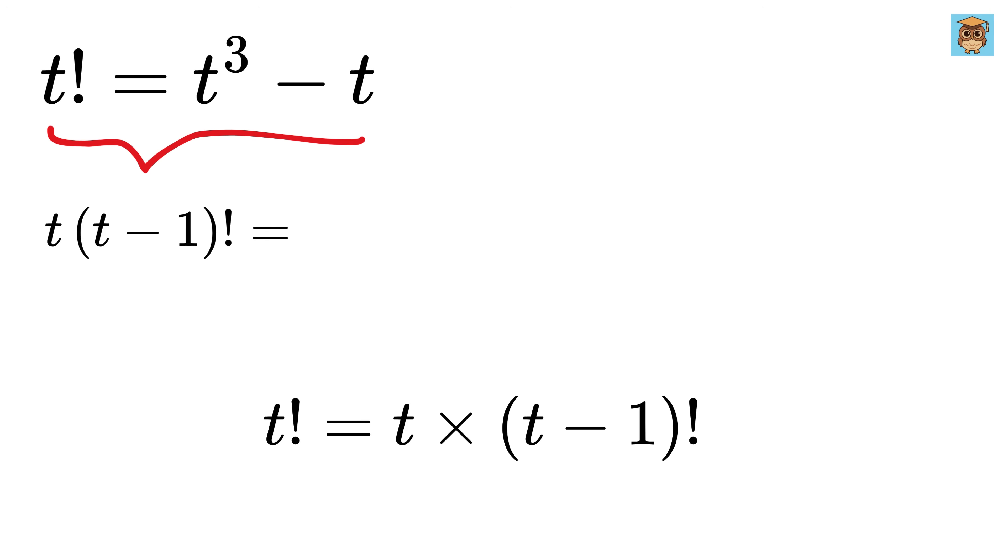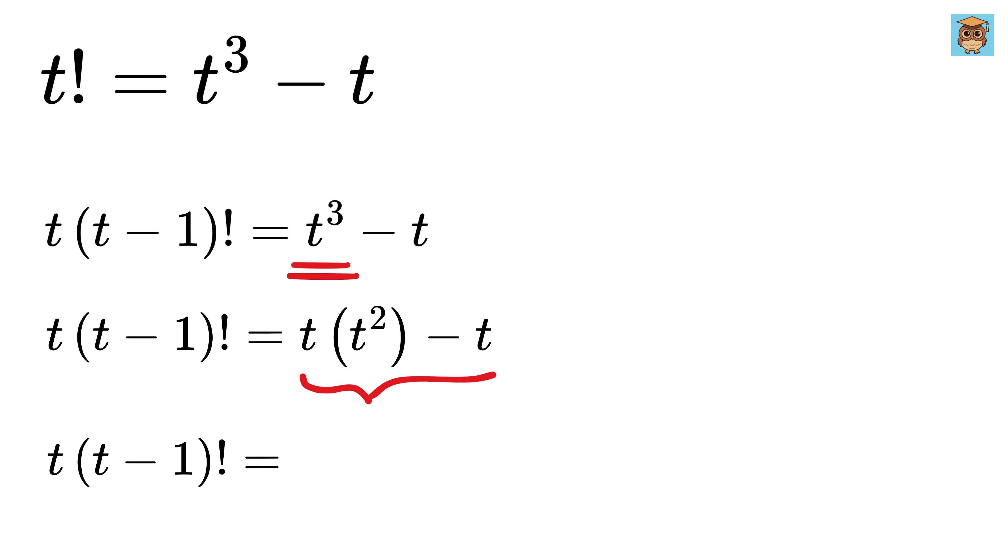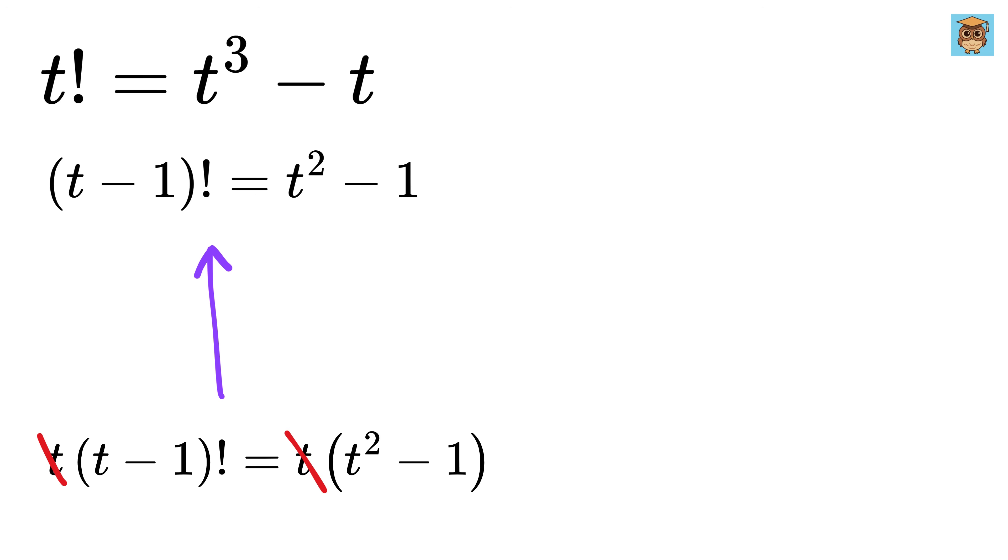So this will become t times t minus 1 factorial equals t cube minus t. Now, we can rewrite this t cube as t times t square. From this right-hand side, take t as common, and we get t times t square minus 1. Wow, both these t will get cancelled out, and we will be left with t minus 1 factorial equals t square minus 1.